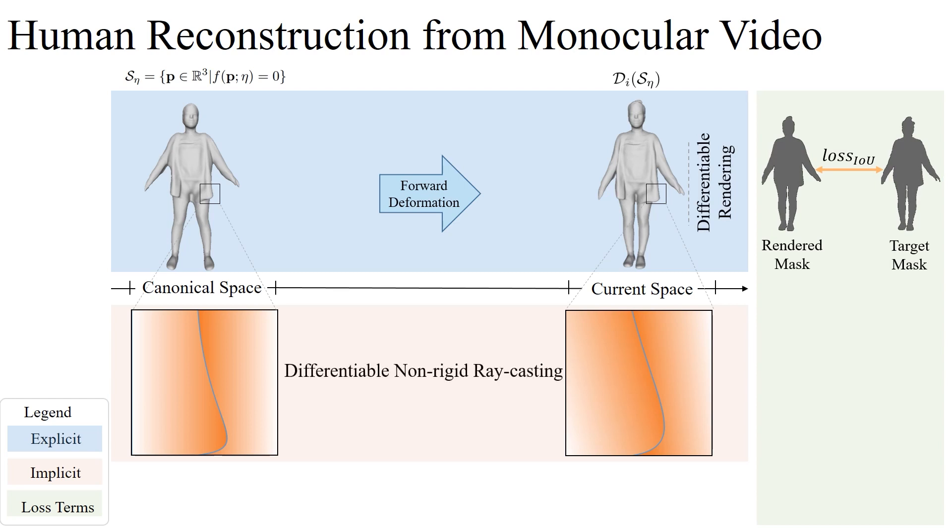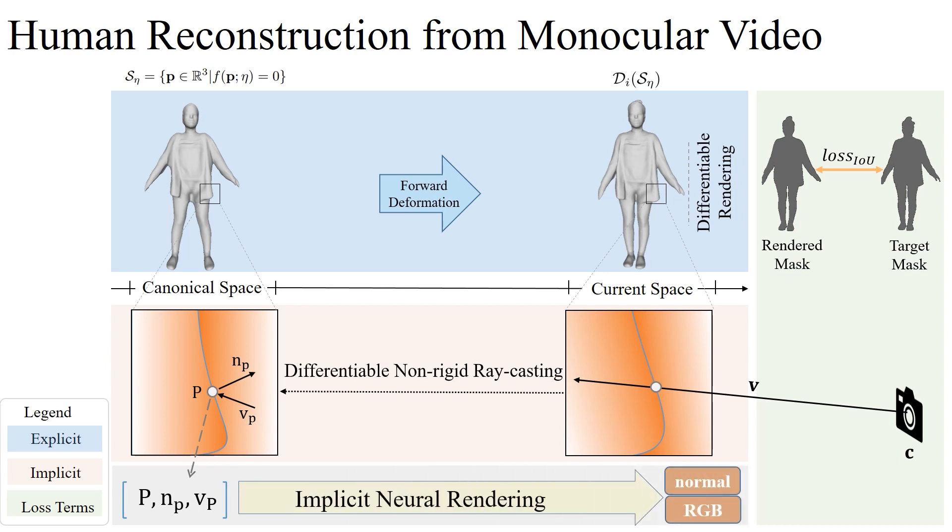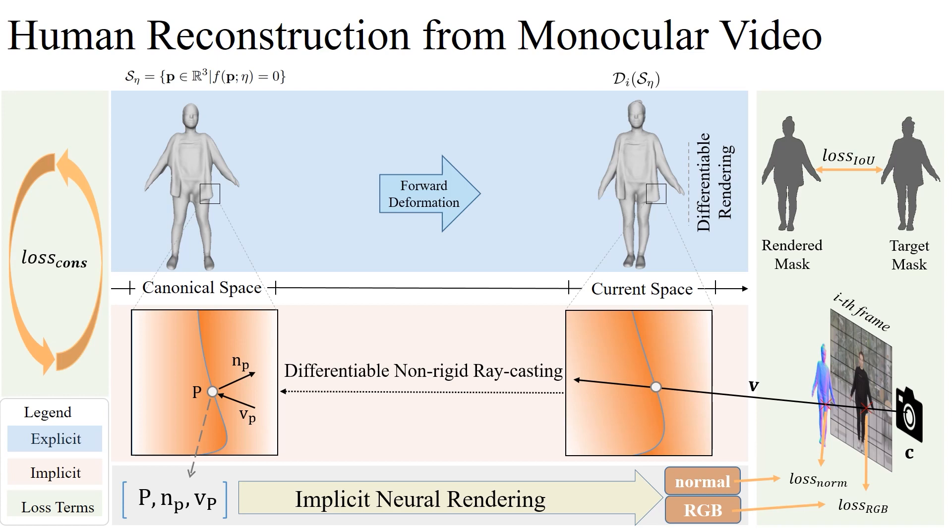To refine the implicit surface, we propose the differentiable non-rigid ray casting algorithm to find the intersection point P of the ray and the implicit surface. Then, the implicit neural rendering MLP will infer P's color based on its attributes. Corresponding pixels color and predicted normal are utilized to refine the geometry. Finally, a match loss is designed to make both representations as consistent as possible.